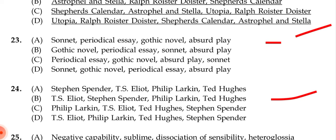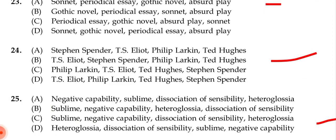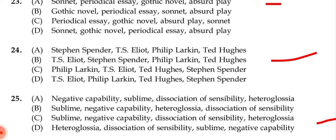Question 23: The correct answer is (a): sonnet, then periodical essay, then gothic novel, then absurd play. Question 24: The correct answer is (b): T.S. Eliot, then Stephen Spender, then Philip Larkin, then Ted Hughes.